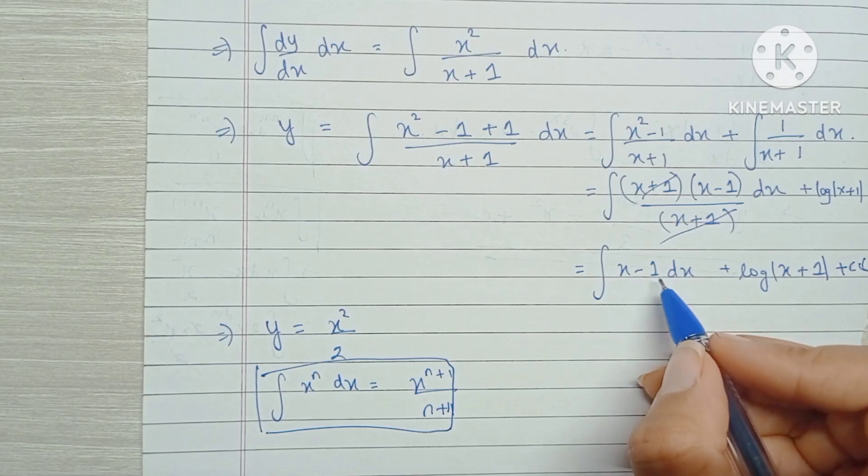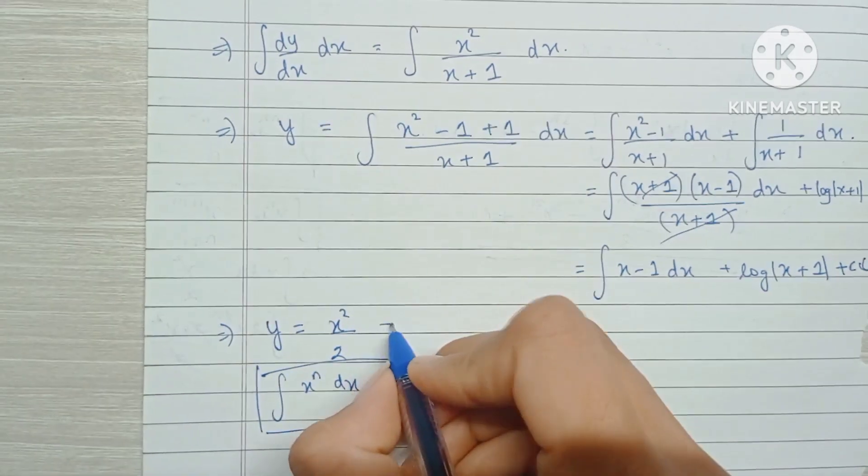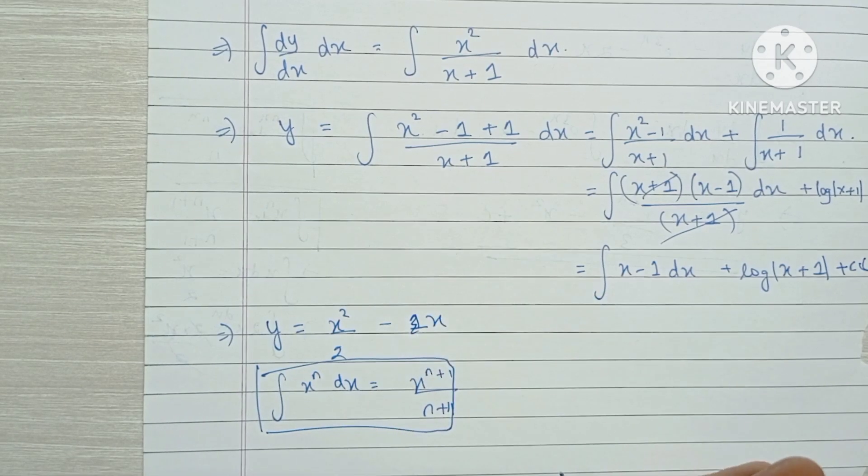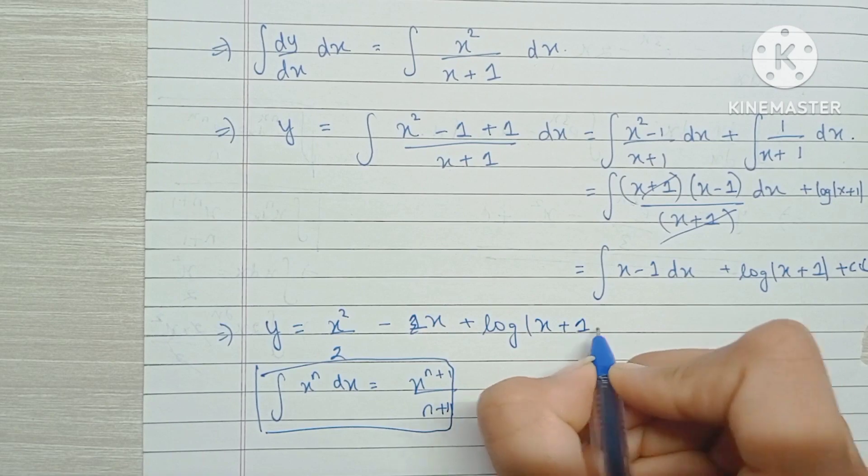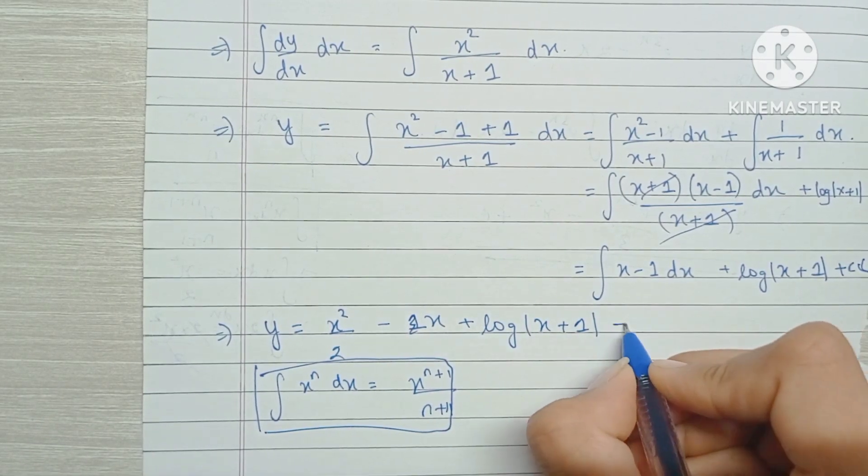The integration of 1 is x so this becomes minus x and we have plus log mod of x plus 1 and we add an arbitrary constant.